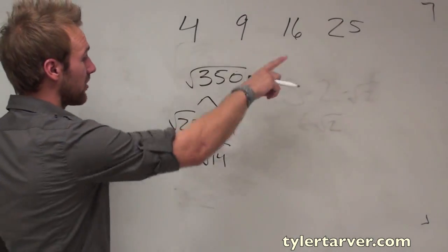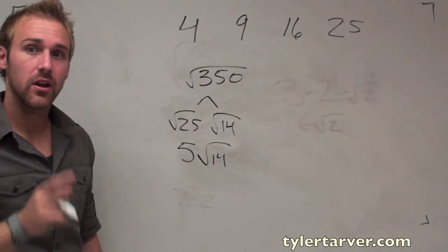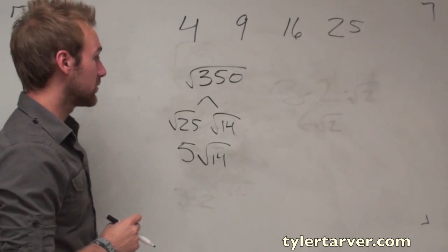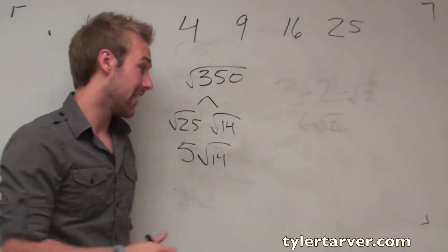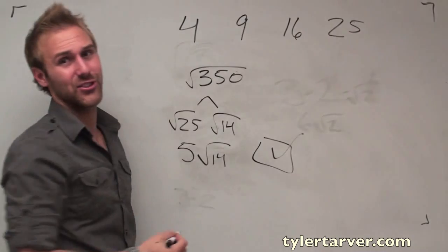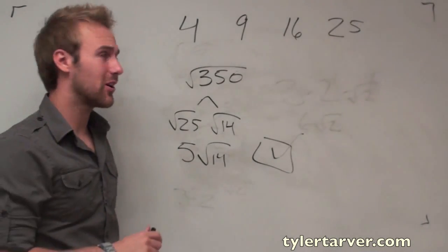Radical 25 is five. Bring down my radical fourteen. Now, do any of these numbers go into radical fourteen? No. So, guess what? I am done. Boom shakalaka. I thought you knew. Check it off. Rock the vote. Call P. Diddy.